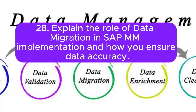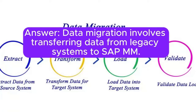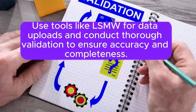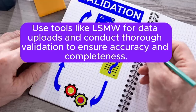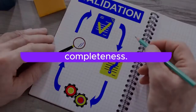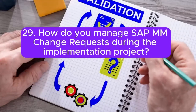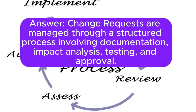Question 28: Explain the role of data migration in SAP MM implementation and how you ensure data accuracy. Answer: Data migration involves transferring data from legacy systems to SAP MM. Use tools like LSMW for data uploads and conduct thorough validation to ensure accuracy and completeness. Question 29: How do you manage SAP MM change requests during the implementation project? Answer: Change requests are managed through a structured process involving documentation, impact analysis, testing, and approval. Changes are implemented following change management procedures.